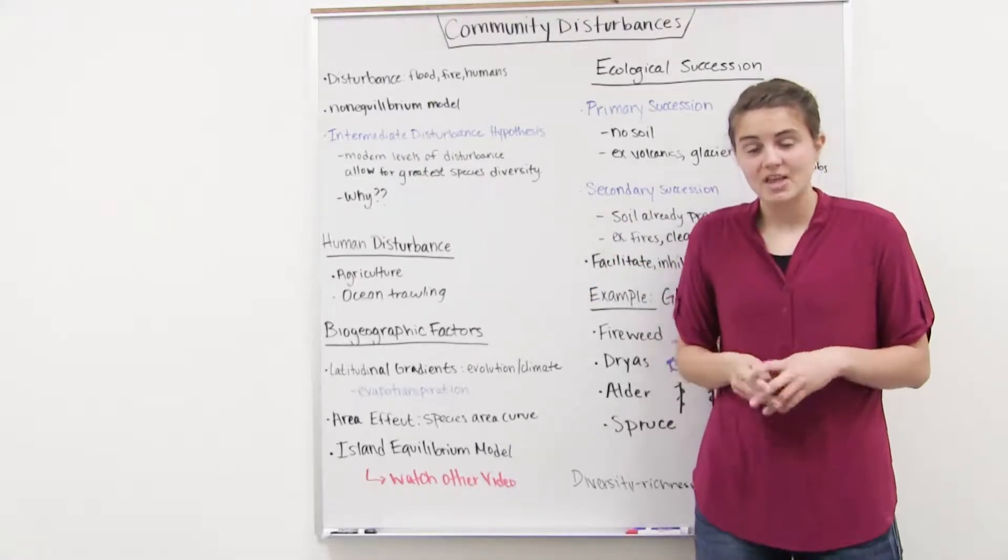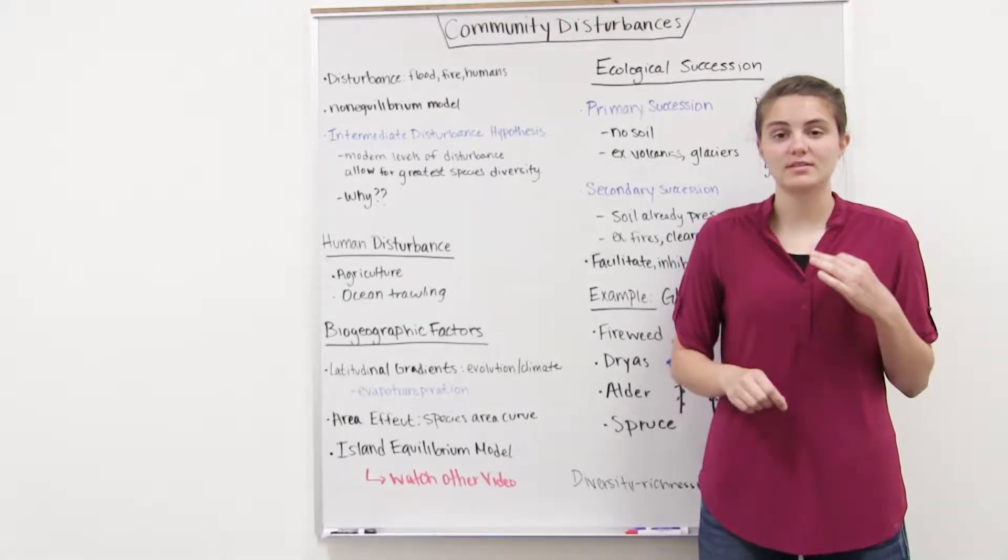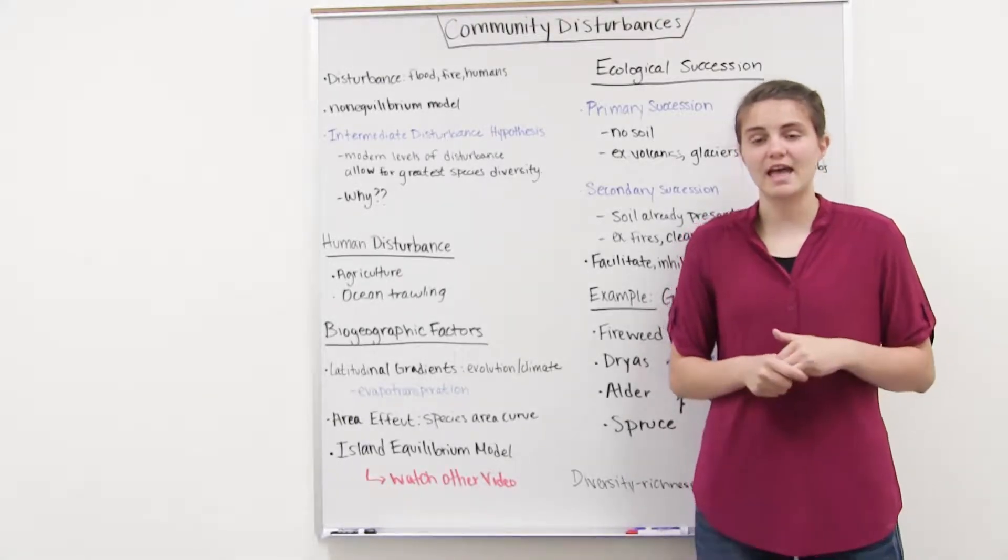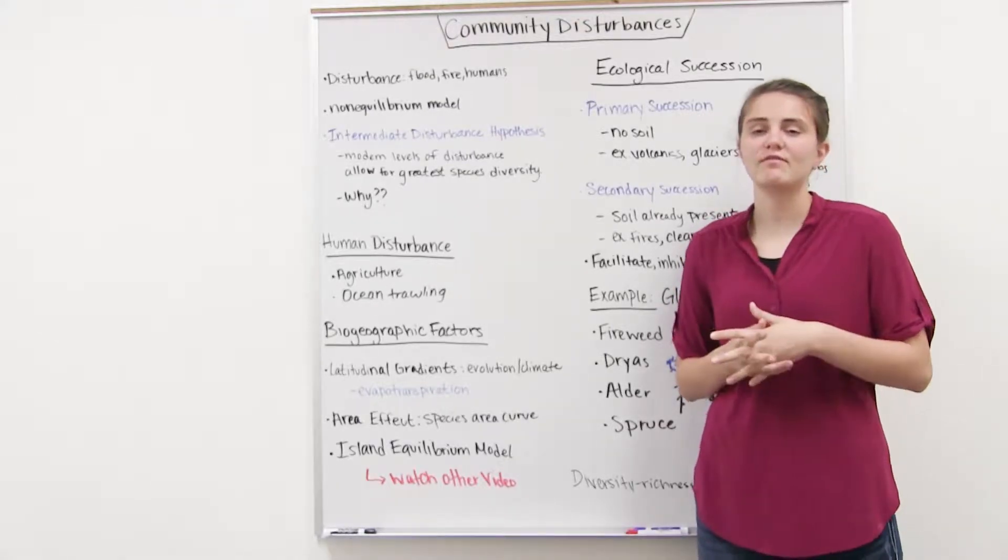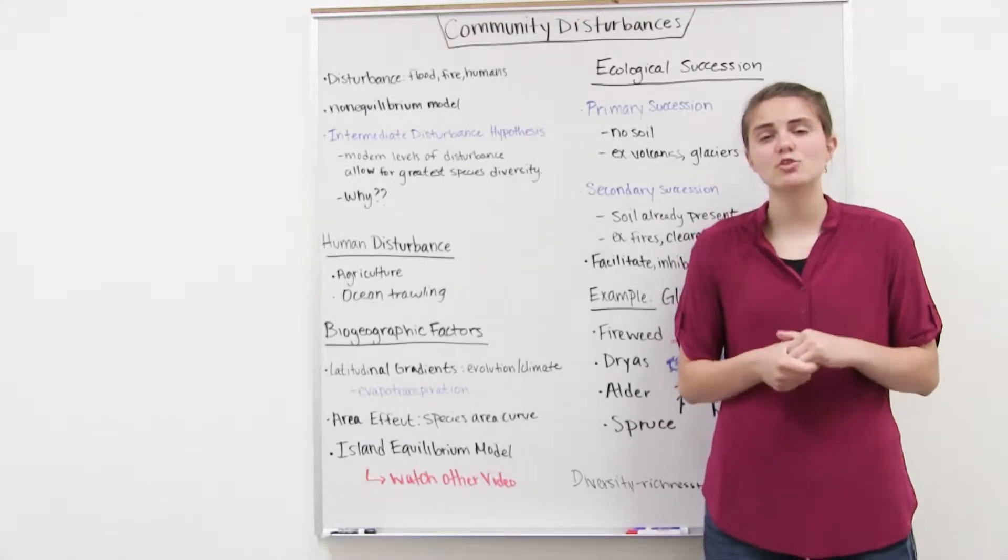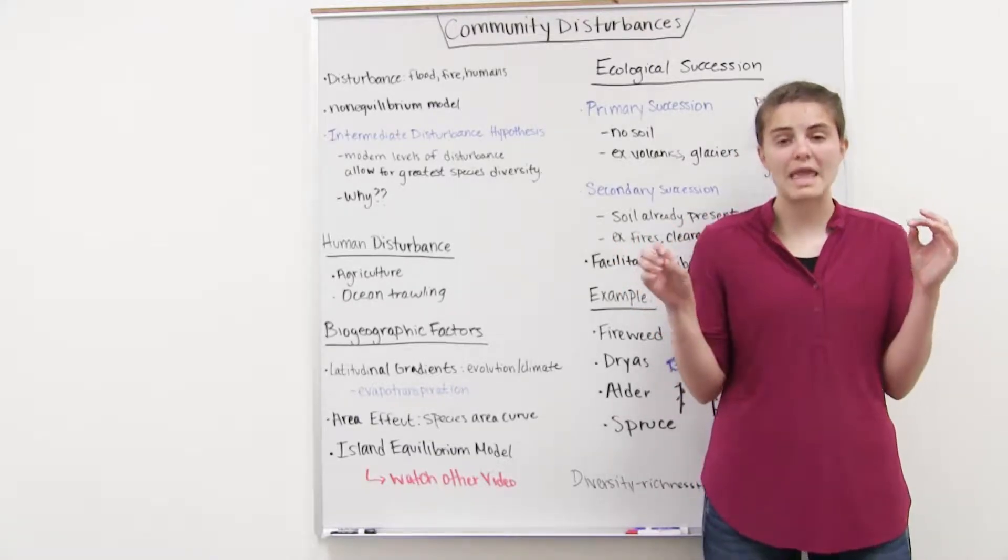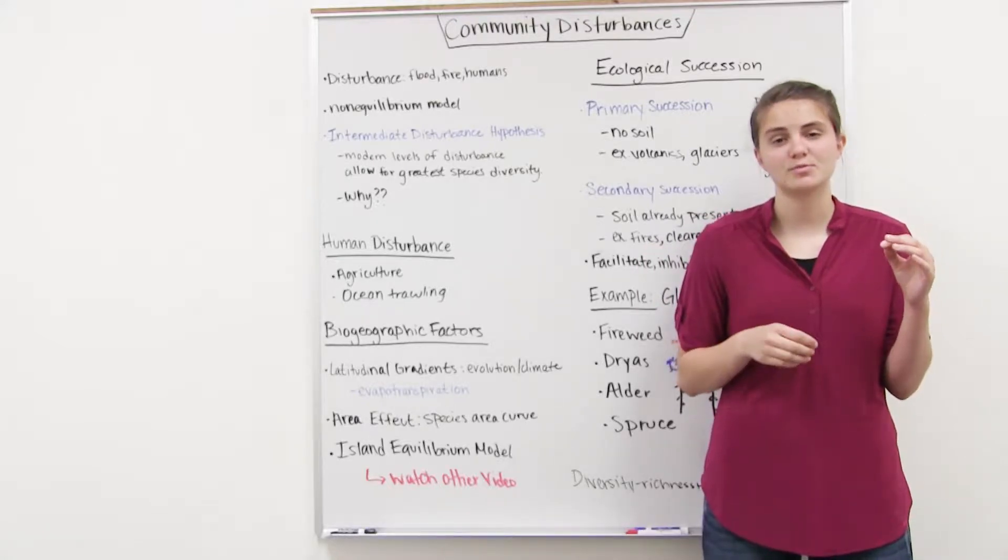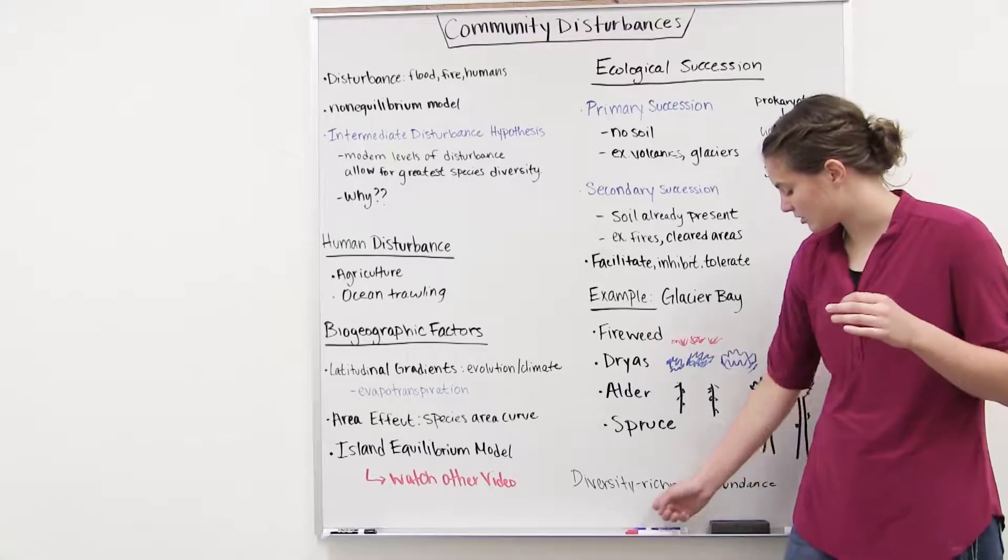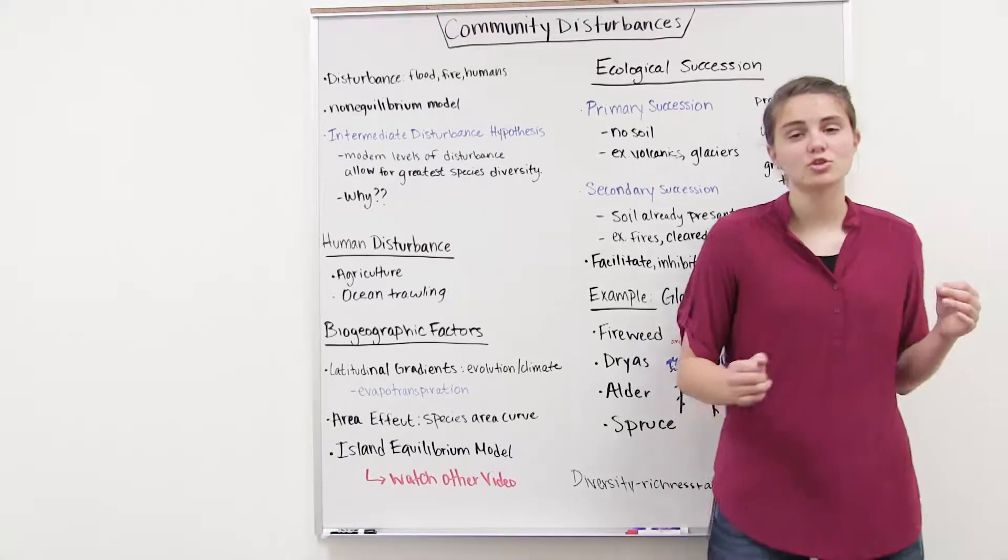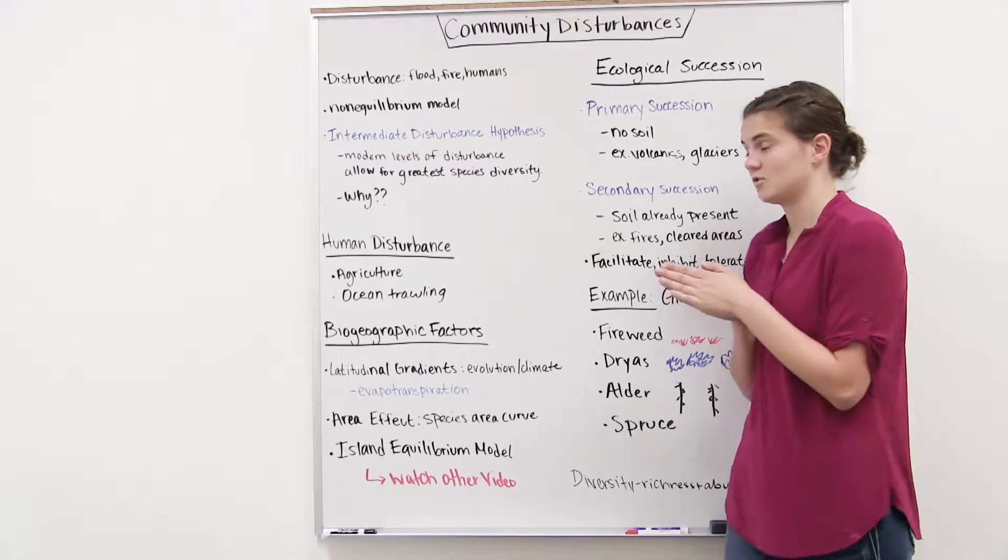And the reason is because when you have low disturbance, you allow for these dominant species to arise, species that have some sort of ecological or evolutionary advantage over other species. And so they'll become more prominent in your community, and they'll kind of outweigh all of the species that aren't as adapted. So remember, species diversity is based on richness and abundance. So if we don't have a lot of species, or there's just a lot of one type, then we don't have a lot of species diversity.